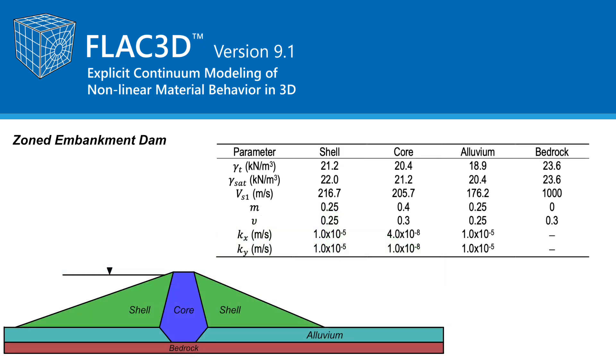General material properties used in the model are shown for the shell, core, alluvium, and bedrock. Parameters listed include moist unit weight, saturated unit weight, shear wave velocity at a vertical effective stress of one atmosphere, exponent coefficient m that allows the shear wave velocity to vary with effective stress, drained Poisson's ratio, horizontal permeability, and vertical permeability. More modeling specific parameters are presented next.